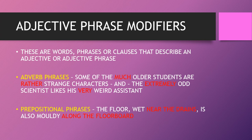Adjective phrase modifiers are words, phrases, or clauses that describe an adjective or adjective phrase. First, adverb phrases: 'some of the much older students are rather strange characters' and 'the extremely odd scientist likes his very weird assistant.' We've already got adjectives like 'strange,' 'odd,' 'weird,' or a comparative like 'older' — the modifying words add more detail. Prepositional phrases: 'the floor wet near the drains is also moldy along the floorboard' — they begin with prepositions and modify an adjective.